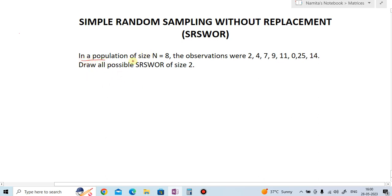In a population of size 8, the observations were 2, 4, 7, 9, 11, 0, 25, 14. Draw all possible SRSWOR of size 2. That is simple random sampling without replacement of size 2.